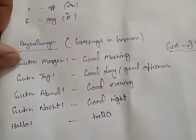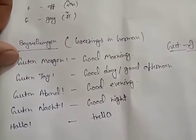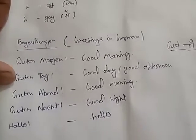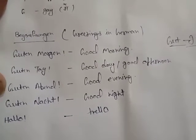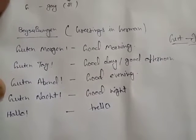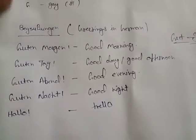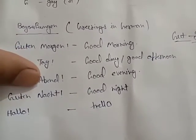Guten Tag means good day or good afternoon. Guten Abend means good evening. Guten Nacht means good night, and Hallo means hello. So Morgen means morning, Tag means day, Abend means evening, and Nacht means night.